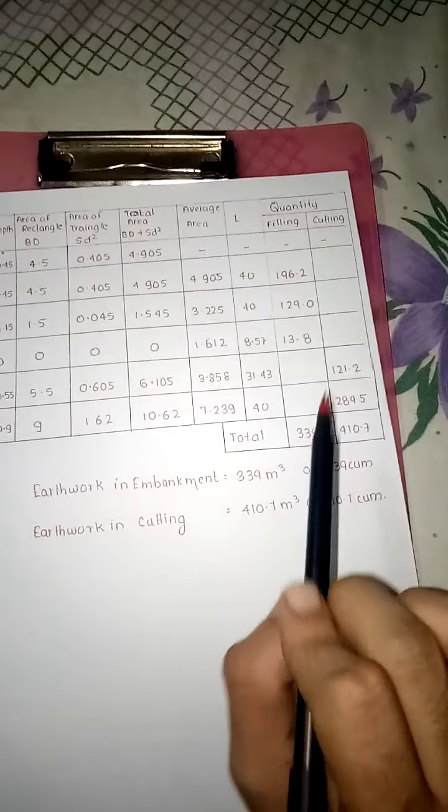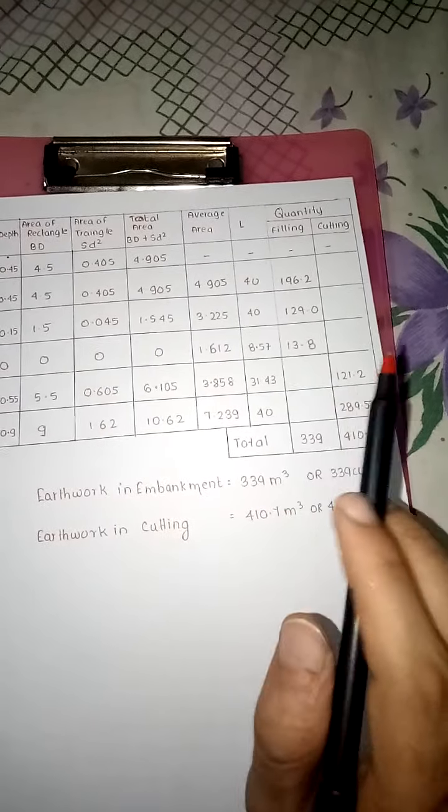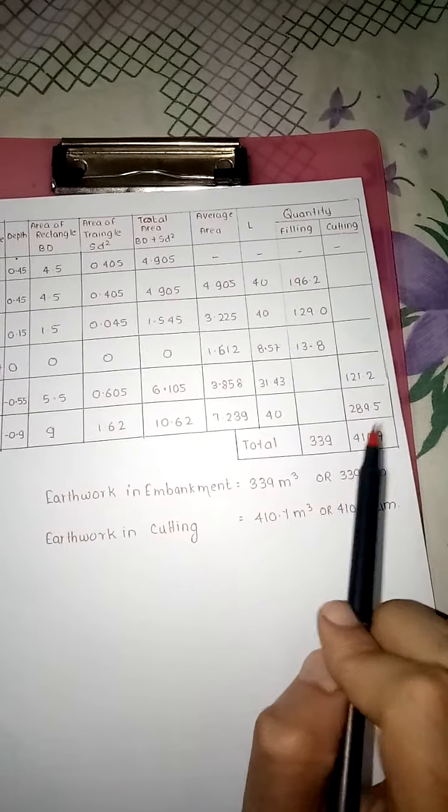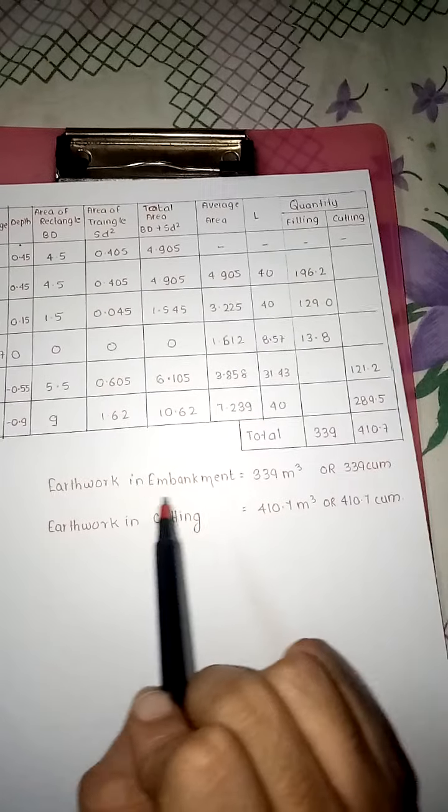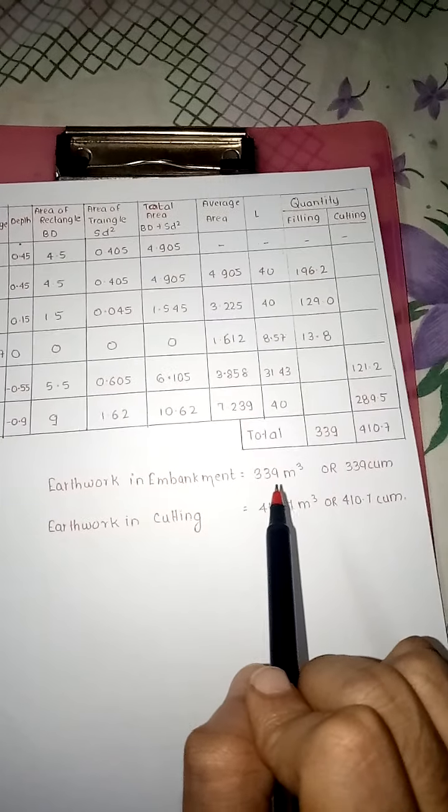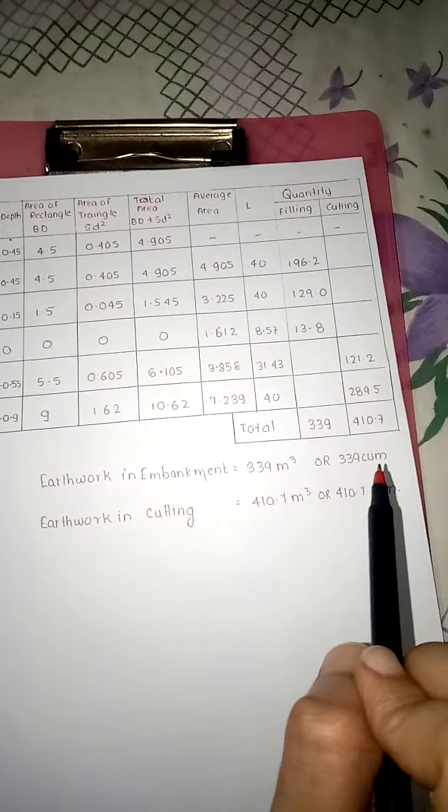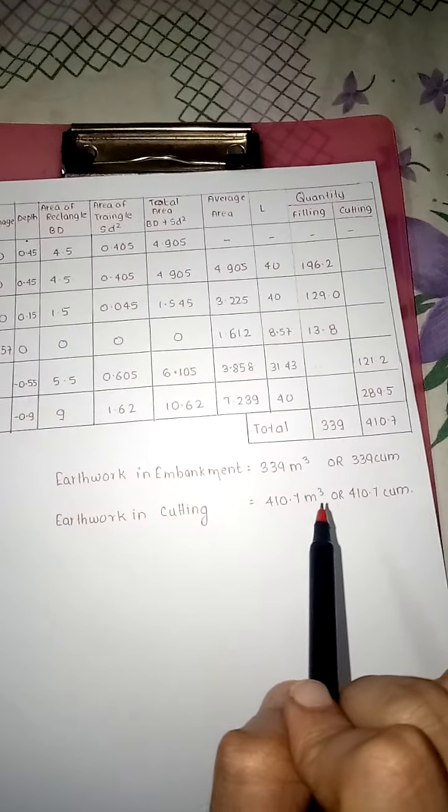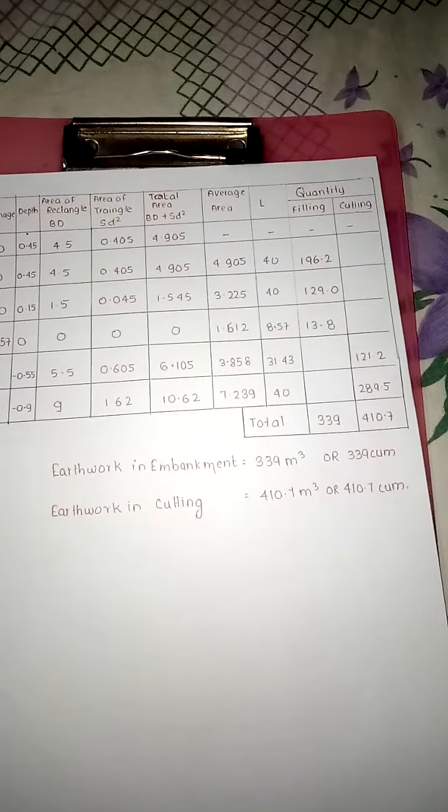Now total: total filling, total cutting. Addition of these three values = 339, addition of these two = 410.7. Earthwork in embankment equals 339 cubic meter. Earthwork in cutting = 410.7 cubic meter.